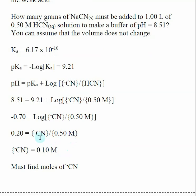So if I solve for the concentration of CN⁻, this means to get the pH equal to 8.51, I need to make my concentration of CN⁻ equal to 0.10 molar. So now it becomes a concentration question.